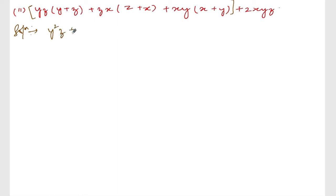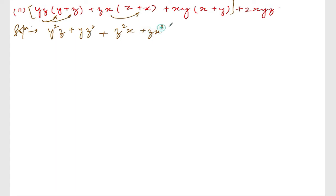yz times y gives y²z, yz times z gives yz². Then zx times z gives z²x, zx times x gives zx². Then xy times x gives x²y, xy times y gives xy². Plus 2xyz.